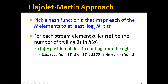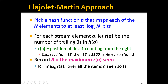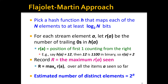For example, let's say we have an element a whose hash value is 12. Since 12 is 1100 in binary, we can see that it has two trailing zeros. Therefore, r(a) equals 2. As the stream progresses, we keep track of the maximum r(a) we have ever seen, which we denote as capital R. Formally, R is the maximum of r(a) over all items a seen so far. The estimated number of distinct elements is then 2 to the power of R.